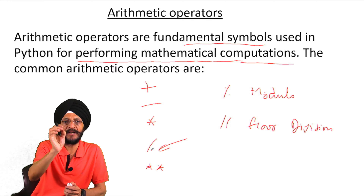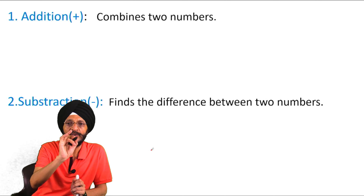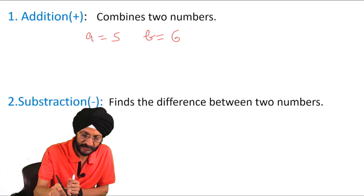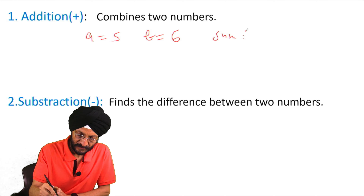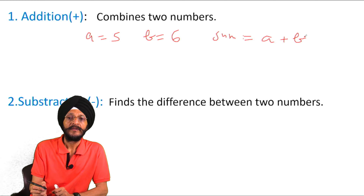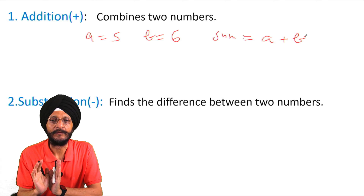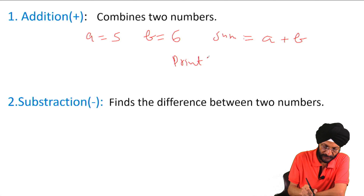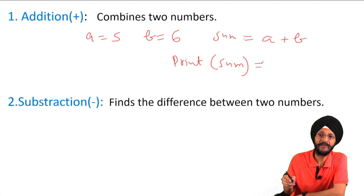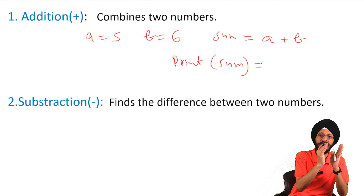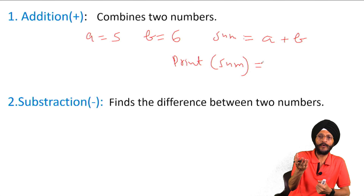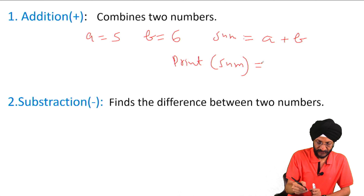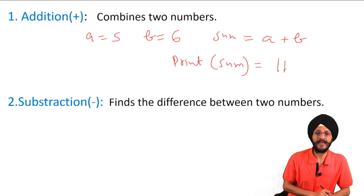Now we will discuss each of these arithmetic operators one by one. Addition combines two numbers. Suppose a is equal to 5 and b is equal to 6, then the sum is a plus b. We will use VS Code and the print function to get the result. When 5 is added to 6, the output will be 11.